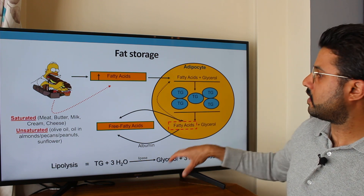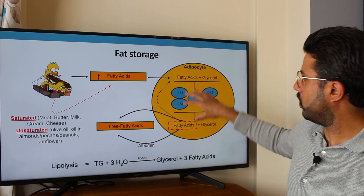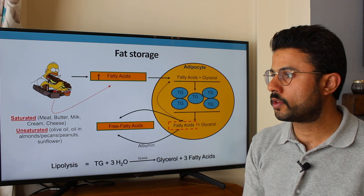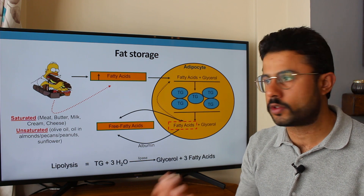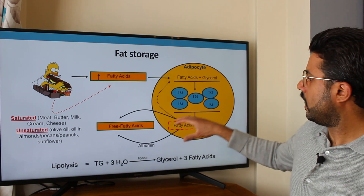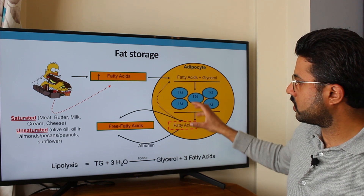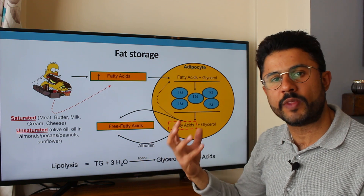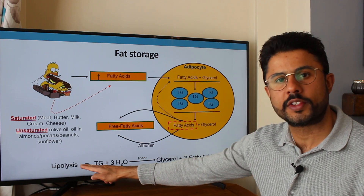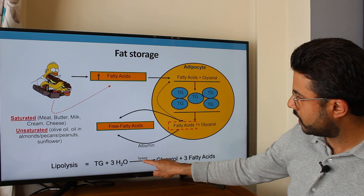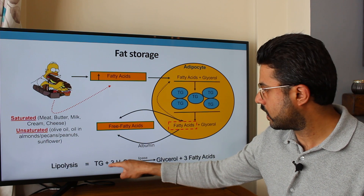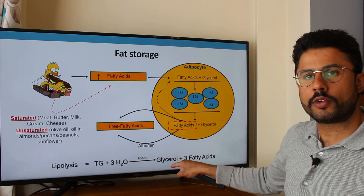For example, two hours after lunch the triglycerides have stored in the adipocyte. You now want to go for a two-hour cycle ride or a long eight-mile run at low duration, low intensity. At some point you are going to start using fatty acids to produce ATP within the muscle. This process is called lipolysis, which is catalyzed by the enzyme lipase and essentially involves three water molecules breaking down the triglyceride to form glycerol and three fatty acids.